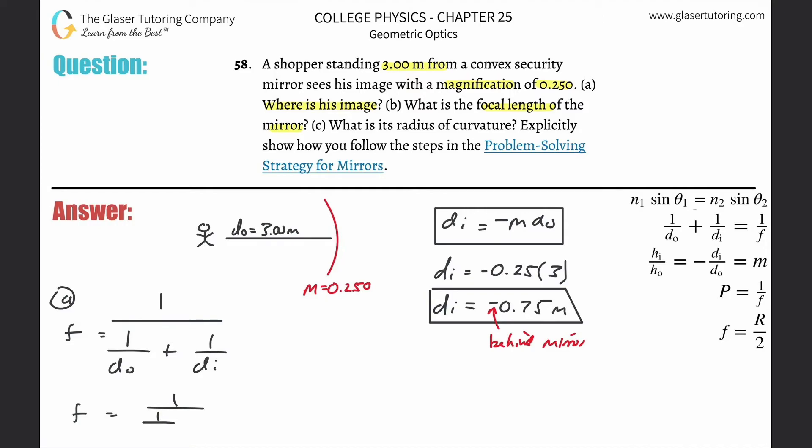One divided by do, so do we said was going to be 3 meters, plus one divided by di. Di was negative 0.75. All you have to do now is do the math. Do the denominator first: one divided by 3 plus one divided by negative 0.75 equals negative 1. Then do one divided by negative 1, which will be negative 1. So negative 1 meter is going to be the focal length.